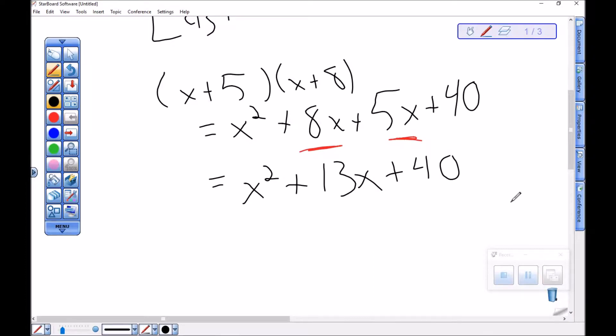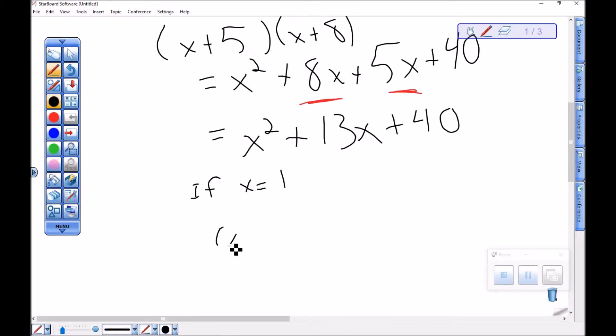And it's worth noting, these two expressions give the same value for all values of x. For example, if x was 1, then x plus 5 times x plus 8 is 6 times 9, which is 54.